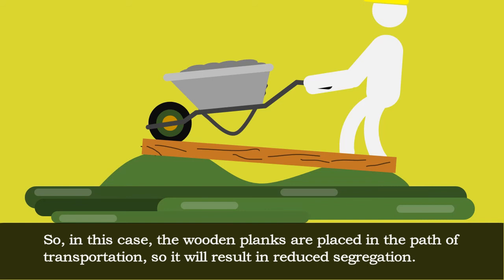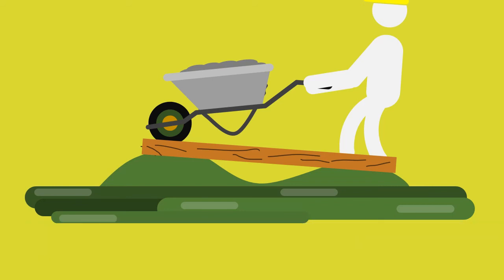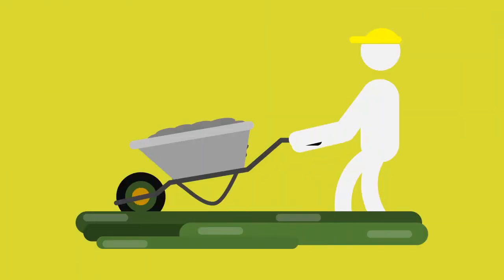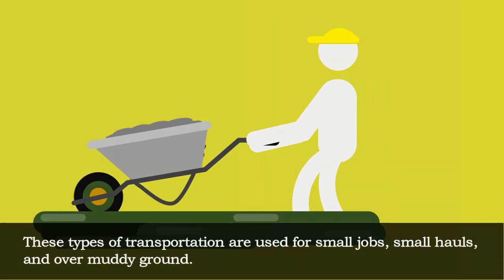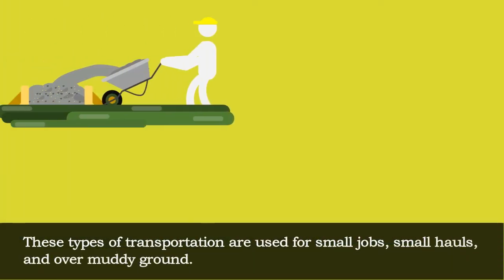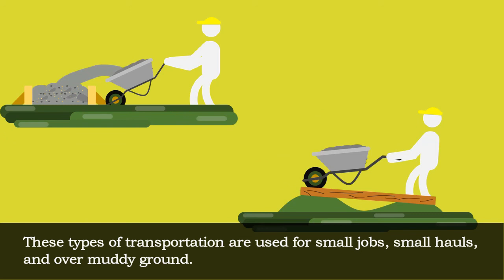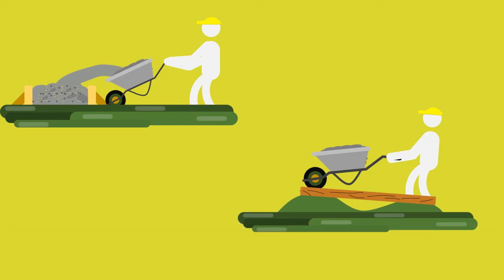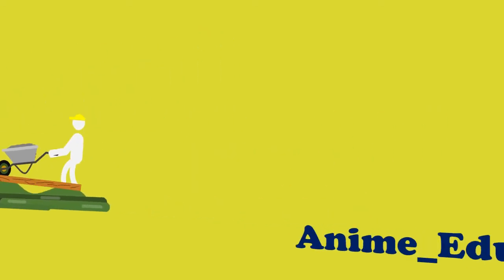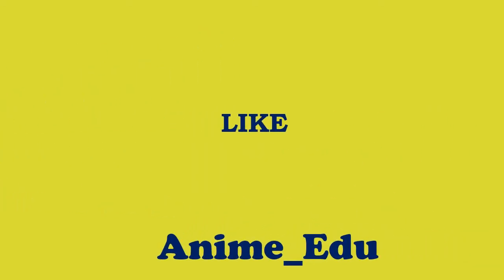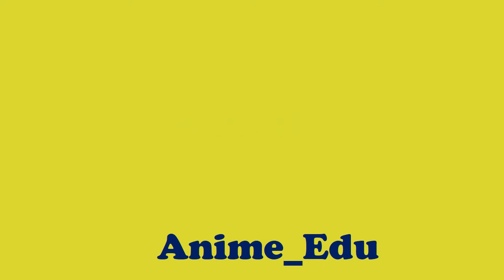The average capacity of a wheelbarrow is 35 liters, that is 80 kilograms. These types of transportation are used for small jobs, small halls, and over muddy ground.